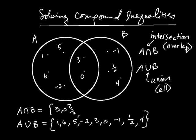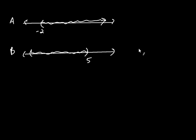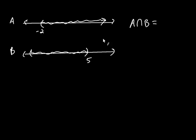Let's extend these ideas to intervals. I drew two more sets on number lines: A is all numbers greater than negative two, and B is all numbers less than five. For A intersect B, intersection means overlap, and clearly it's all the numbers between negative two and five. We write that in interval notation as negative two to five.